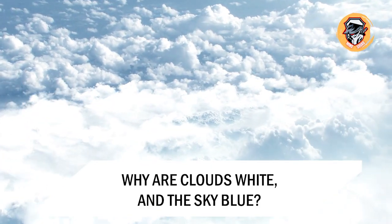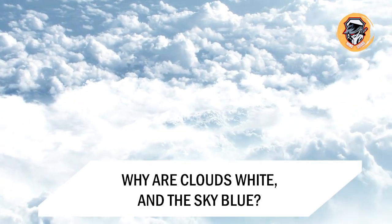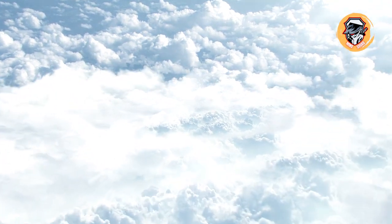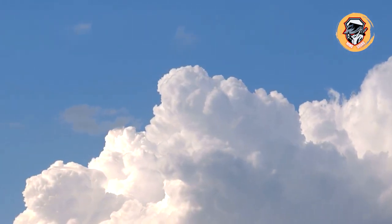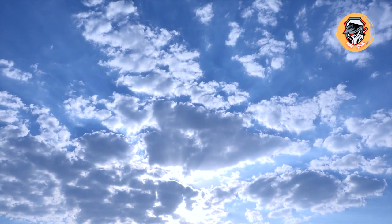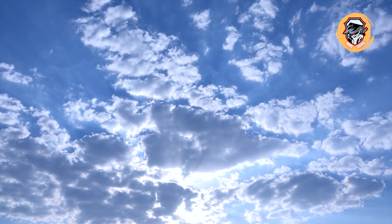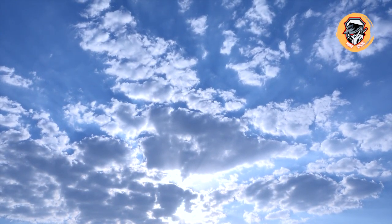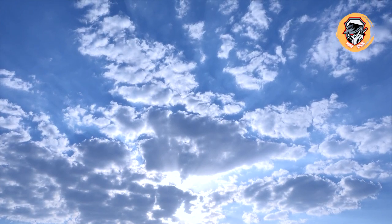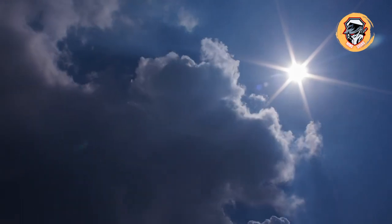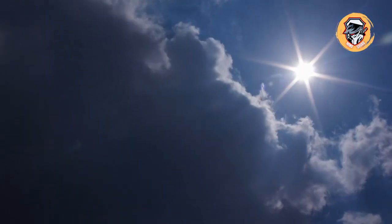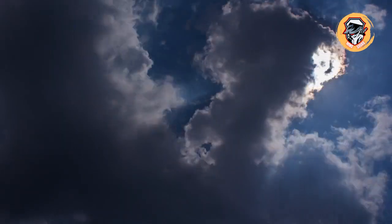Why are clouds white and the sky blue? Have you ever wondered why the clouds are white or why they darken and turn gray? It's all about how sunlight interacts with the contents of a cloud. When sunlight reaches atmospheric particles in the sky, blue light is scattered away more easily than other colors because it's scattered more effectively than longer wavelength forms of light like red, yellow, green, and orange.